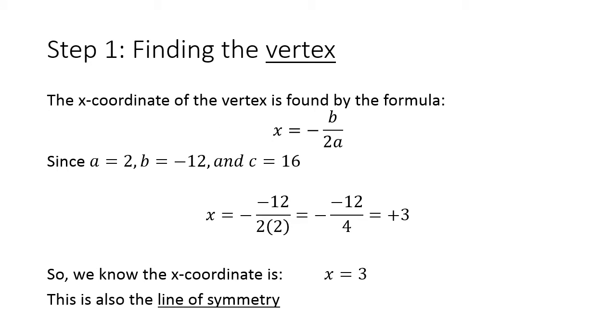To find the vertex, we start with the x-coordinate, and the x-coordinate formula is really, really simple. It's negative b over 2a. And since we found our a was 2, our b was negative 12, and our c was 16, we plug those in and we simplify. One thing I want to make a big note of as I make this video: when we are simplifying this, you must multiply 2 times a first. That has got to be the first step as we simplify.